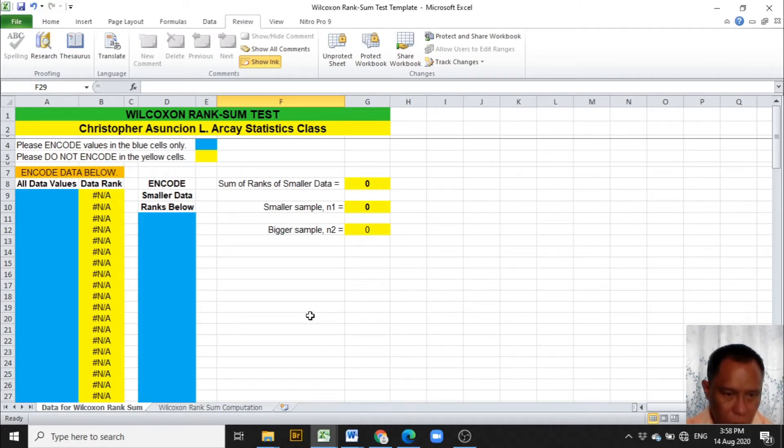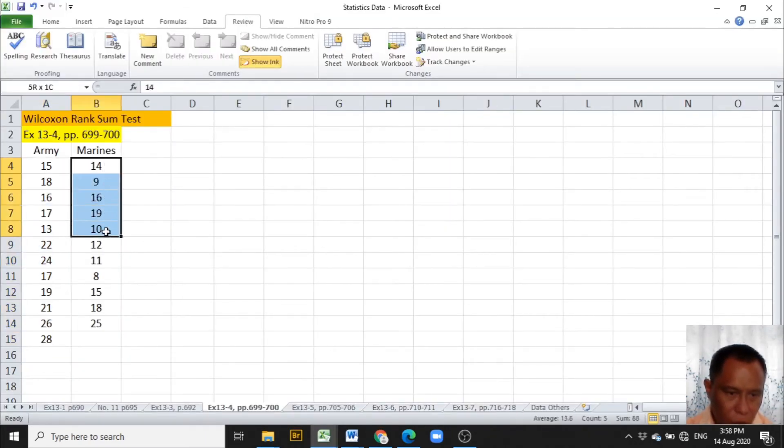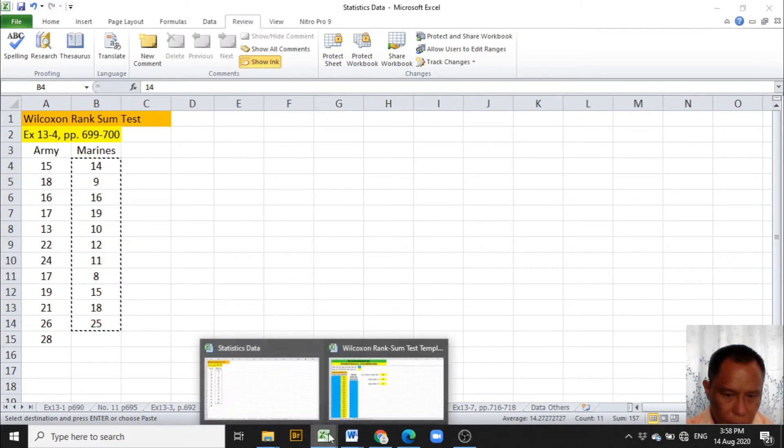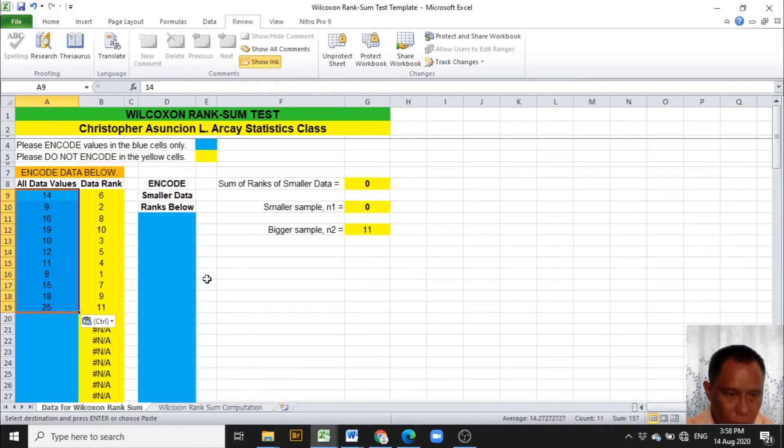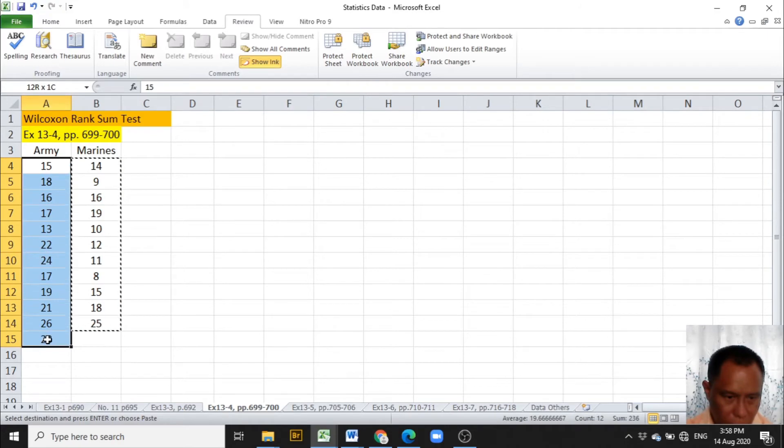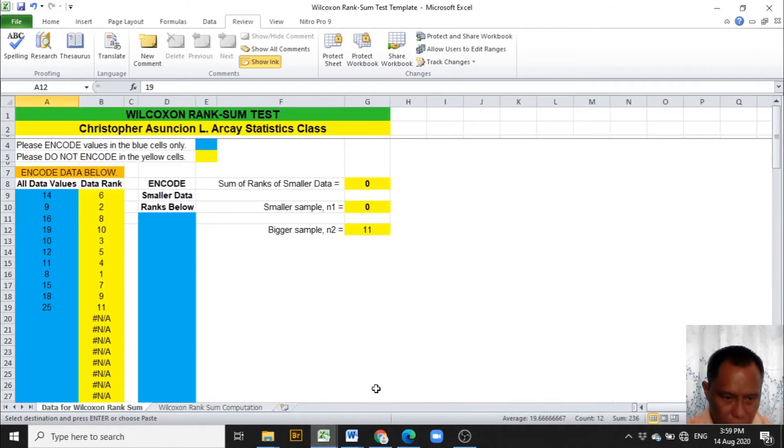We are going to encode the data in the cells colored blue. Since I already encoded the data previously, I'll just be copying and pasting it in Excel template. Notice that we encode the smaller data first for its data ranks to be copied easily along the D column. Next is the data from the Army to be encoded in Excel template.